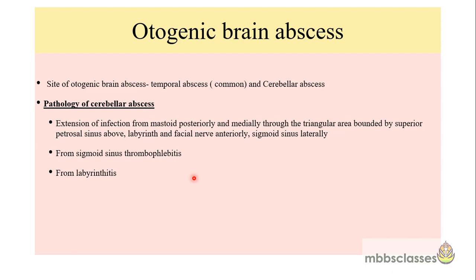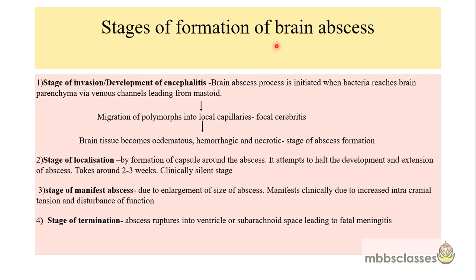Brain abscesses occurring due to chronic otitis media or of ear origin are called otogenic brain abscesses. They can be in the temporal lobe or the cerebellar area; temporal abscess is more common. The temporal abscess develops when disease spreads directly through bone erosion involving the temporal lobe, or by retrograde thrombophlebitis. Cerebellar abscess formation usually occurs when infection extends from the mastoid posteriorly and medially through Trautmann's triangle, which is bounded by the superior petrosal sinus above, the labyrinth and facial nerve anteriorly, and the sigmoid sinus laterally.